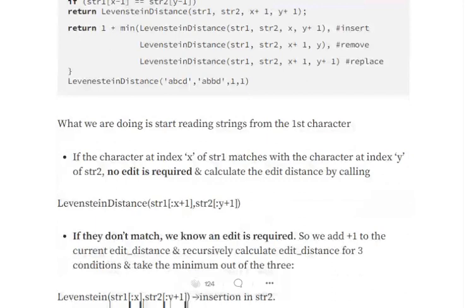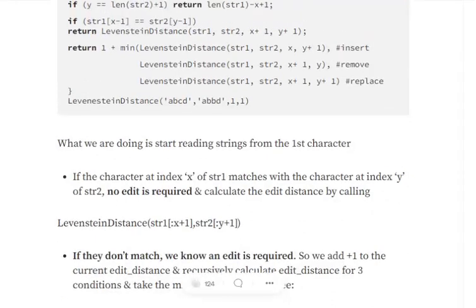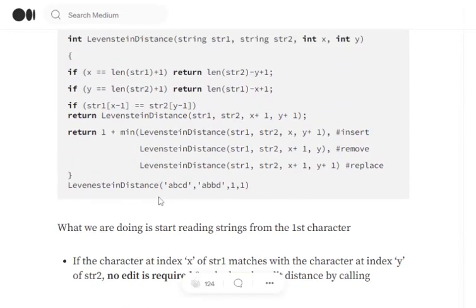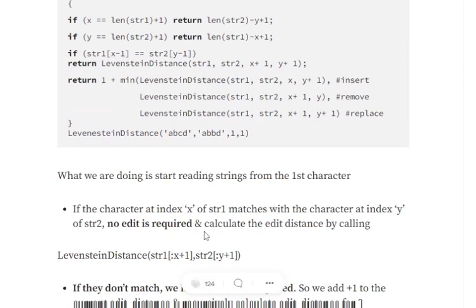We will try to understand the code or just take an overview of it. So if the character at index x of string 1 matches with the character at index y of string 2, this particular condition, no edit is required and nothing is added to the edit distance.